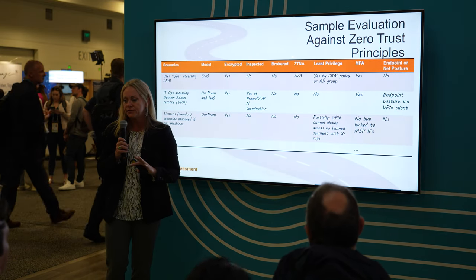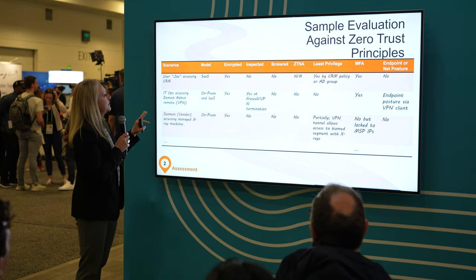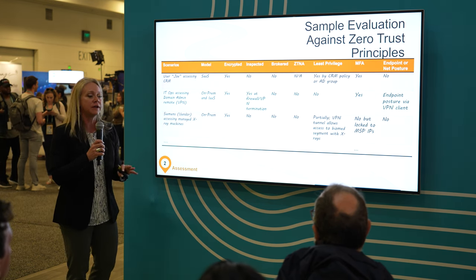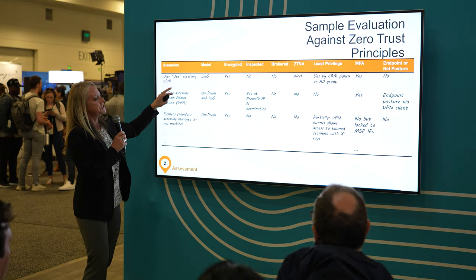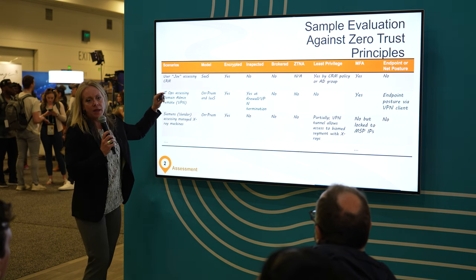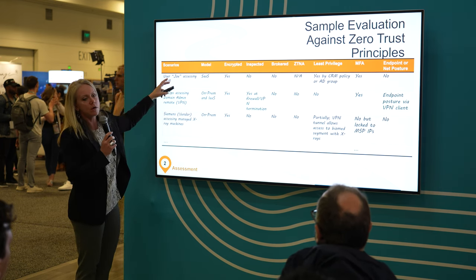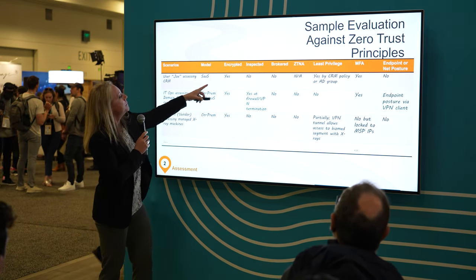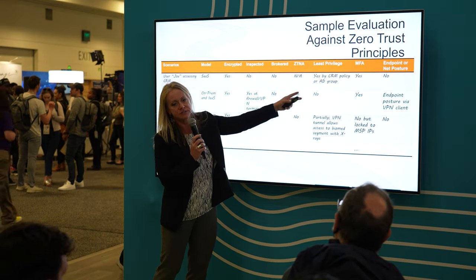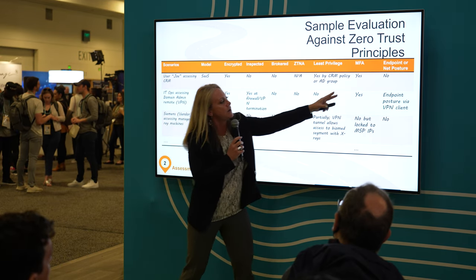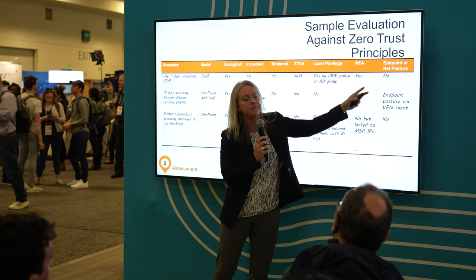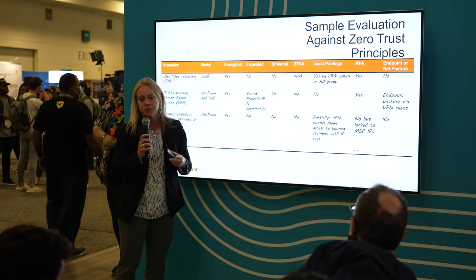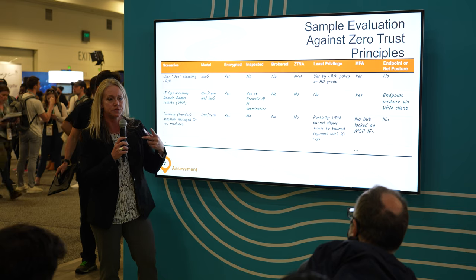I promised to share a little content on how to actually get started. These are example evaluation scenarios. We're taking what we're doing now and mapping it against Zero Trust principles. For example: Joe accessing a SaaS CRM like Salesforce — it's a public service, encrypted, we're not inspecting or brokering it, not really applicable for ZTNA, but we check least privilege, multi-factor, and whether we're factoring in any posturing to the decision. Obviously there are more Zero Trust principles and more columns could be added, but these are the handful most organizations start with when evaluating policies for user-to-resource or device-to-device.